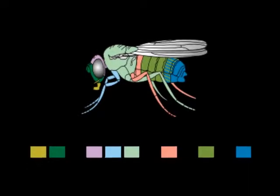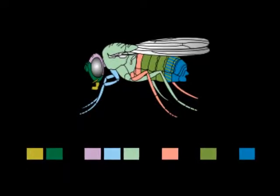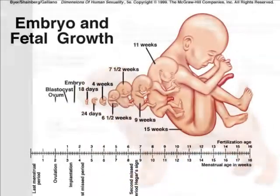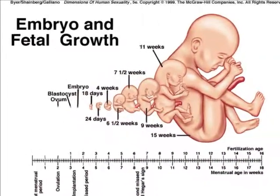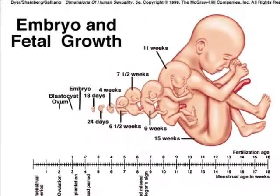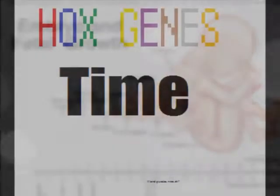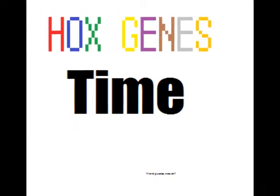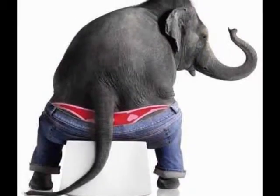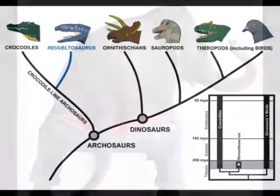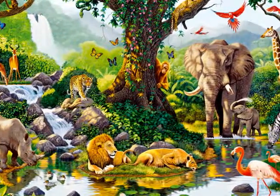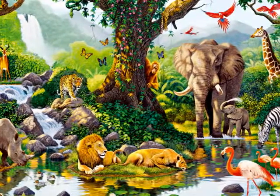Hox genes are a huge part of what give animals their differentiation and characteristics, but nearly all of the Hox genes only begin to develop after your organism leaves its embryonic, and sometimes fetal, phase. This shows that while animals develop Hox genes over time, it is likely there is just one animal that developed different genes, which made its similar embryonic form but developed differently. This happened many times over, leading to the plethora of animals that exist today.